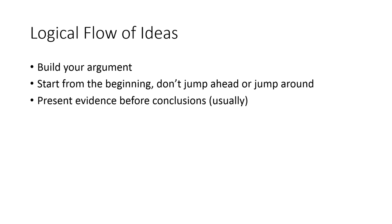The idea is to start from the beginning and don't jump ahead or jump around. Usually what you do is present evidence before conclusions. You shouldn't make a conclusion and then provide supporting evidence. There is one exception to this rule, and that's when you're writing an executive summary, or something for someone who won't necessarily be reading the entire set of evidence you're providing. At that point, you should make it very clear what the conclusion is in case the person doesn't have the time to read the rest of the report. Usually though, you'll know exactly when that's appropriate and when it isn't because of the guidelines on the report.